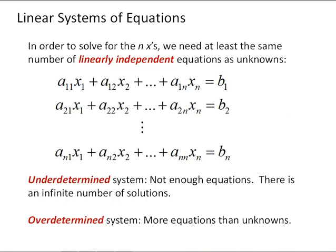So once we have an equation with n variables, we need at least the same number of linearly independent equations as we do unknowns if we're going to solve it. So what we really have is a system of n equations by n unknowns.